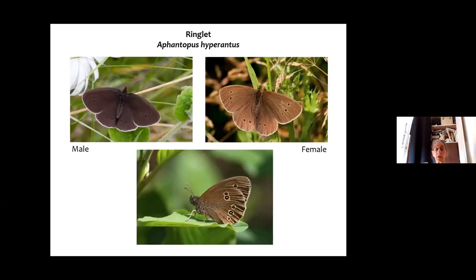The other really common brown butterfly is the ringlet. When flying, it can be hard to tell from a male meadow brown — very difficult. But when fresh, the males are very very dark, and unless they're very worn, you can see a white fringe along the edge of their wings that the meadow brown does not have. Once they land, they've got those rings on the underside — unmistakable.